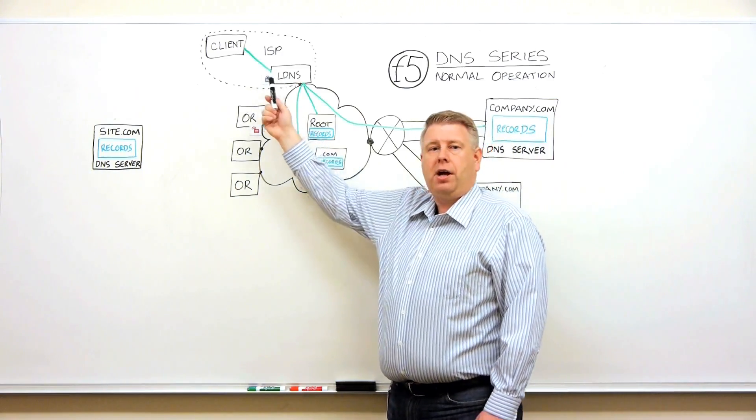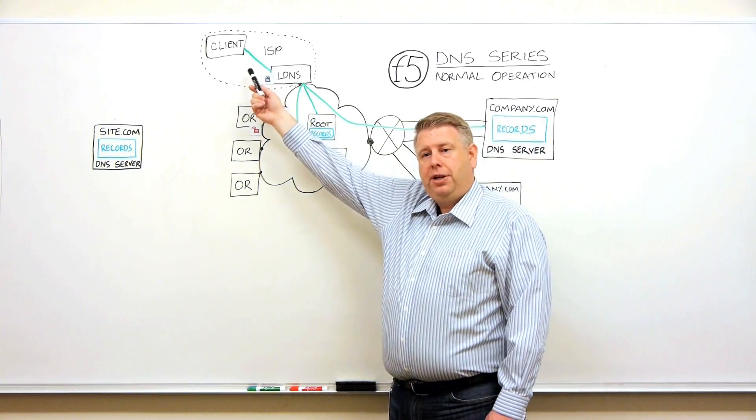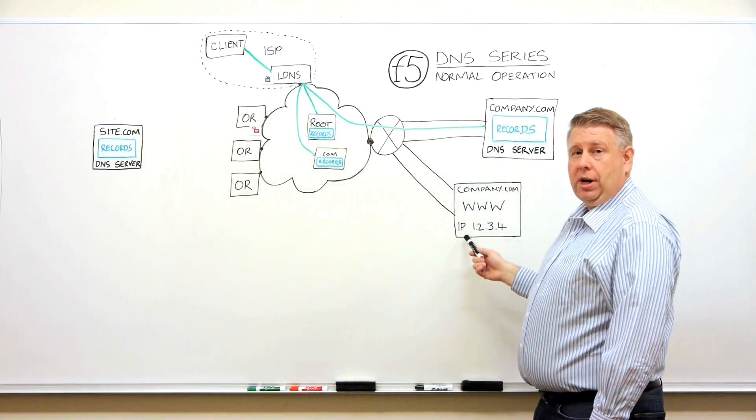Domain Name System is a lot like a phone book. In the phone book, you look up a name, and you get a number. You get a phone number to go to. So the same idea is you get an IP address.